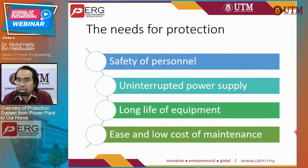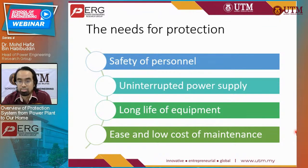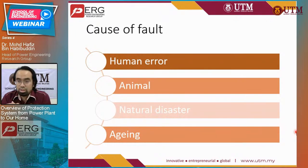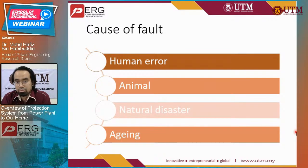Why do we need a protection system? First of all is the safety of personnel — the persons operating and utilizing the system. We need an uninterrupted power supply and we need to ensure equipment will operate continuously with long life and lower cost of maintenance. The reasons we have faults come from basically four items: human error in setting up or operating the system, animals intruding into transmission line or substation compounds, natural disaster, and aging of equipment.